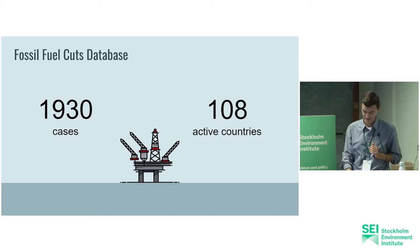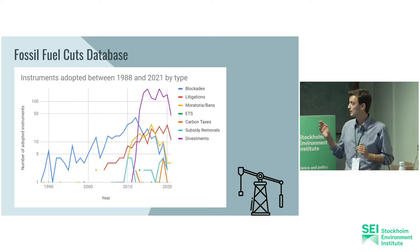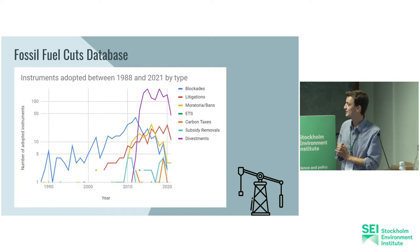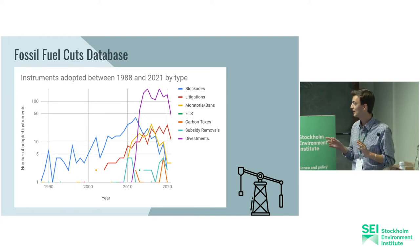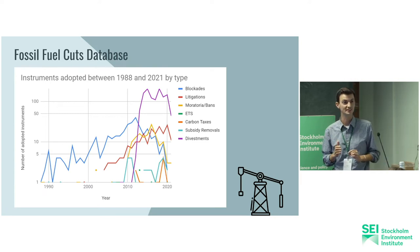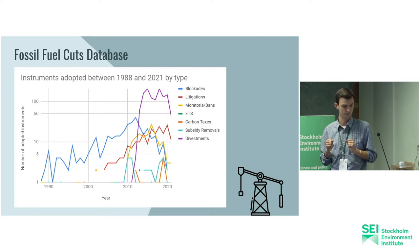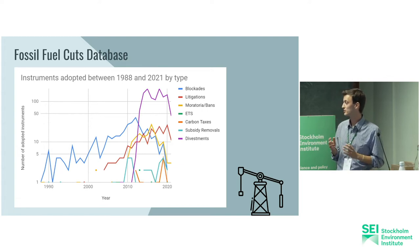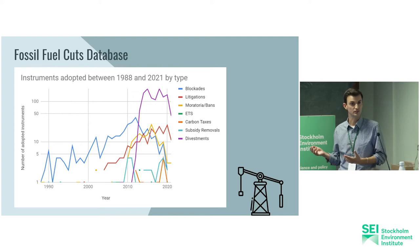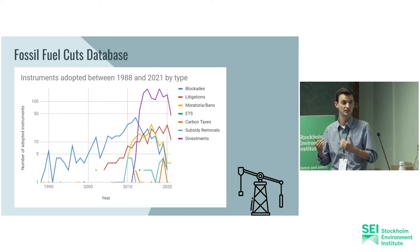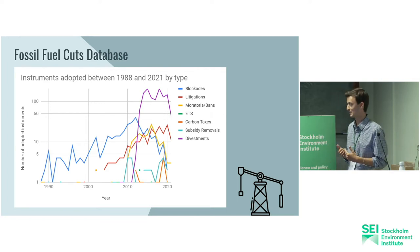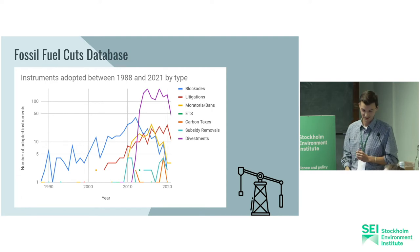In terms of temporal distribution, blockades long dominated the fossil fuel cuts game until about 2012, after which they plummeted. The same year, divestments took off and keep dominating today. Around the late 2010s moratoria and bans picked up at the same time as litigations. However, moratoria and bans have tapered off in the last five or six years, whereas litigations are still going quite strong. The stragglers of this whole story are subsidy phase-outs, emissions trading schemes and supply side carbon taxes, which have been very irregular and quite infrequent.